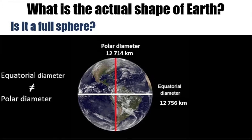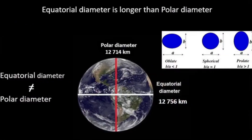The length of the equatorial diameter doesn't equal the length of the polar diameter. Therefore, we can come to a clear conclusion: Earth is not a full sphere. Then, what is the actual shape of the Earth? Equatorial diameter is longer than polar diameter. While keeping this point in mind, let's look at these three diagrams of the shape of Earth. First one — oblate: assume A is the equatorial diameter and B is the polar diameter. If B is less than A, Earth has an oblate sphere.